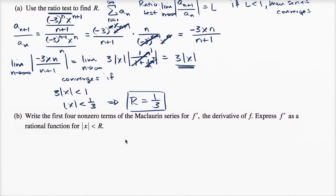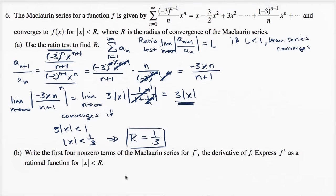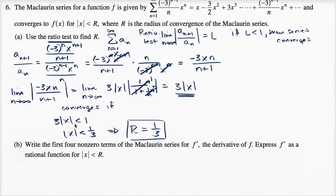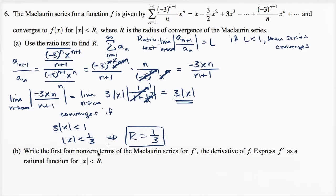So if we want to find f prime, we could just take the derivative of each of these terms with respect to x. And so we could just say, okay, if this is f, then f prime — the Maclaurin series for f prime of x — maybe I should write it that way.